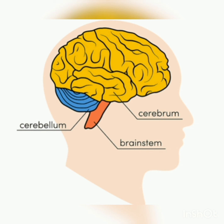So we can find different functions for each part: the cerebrum controls our thinking, learning, and memory; the cerebellum controls our voluntary movements like walking, running, cycling, and posture; and the brain stem or medulla oblongata controls our involuntary actions like heartbeat, respiration, circulation of blood, and digestion. This means the brain stem remains active even when we are sleeping, because it controls involuntary functions which are a continuous process in our body whether we are sleeping or not.